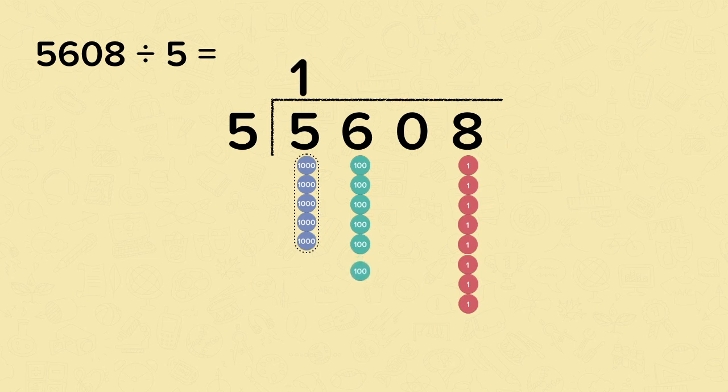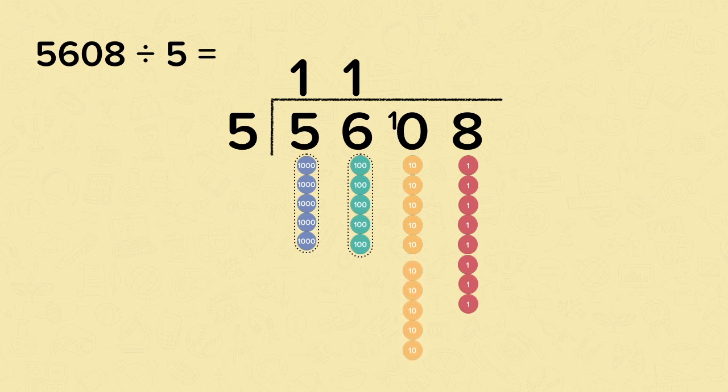Six divided by five, that's one with one remainder. We put the one on the top and the remainder goes into the next place. What we've done here is we've exchanged the remaining hundreds into tens. So instead of now having no tens, we've got ten tens because ten tens make up a hundred. So now we can do ten divided by five, which is two.